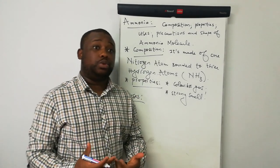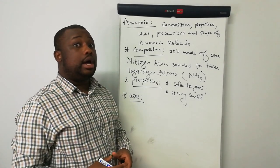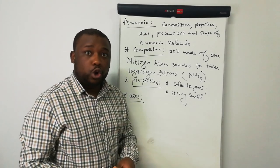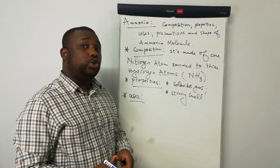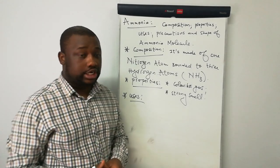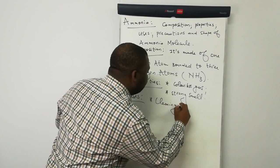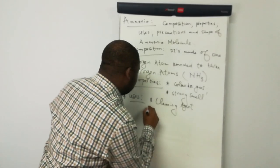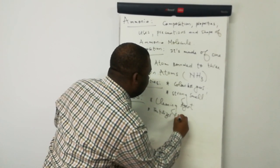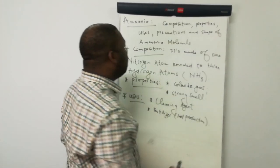Now let us talk about the uses of ammonia. It has many uses, but we'll state a few. Ammonia is used in the manufacturing of household cleaning products — it's used as a cleaning agent. It can also be used as a fertilizer in food production.